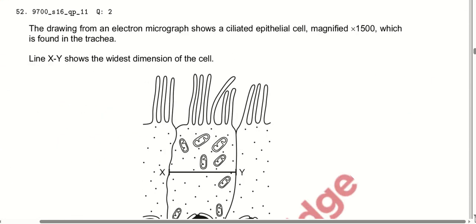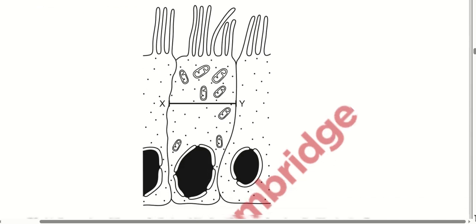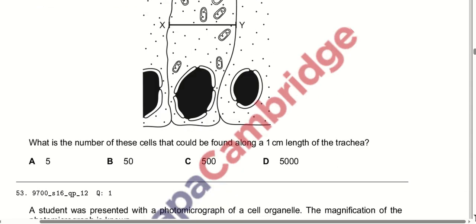The drawing from an electron micrograph shows a ciliated epithelial cell found in the trachea, magnified 1500×. Line XY shows the widest dimension of the cell. The question asks how many of these cells could fit around 1 cm length of the trachea. The answer is 500.